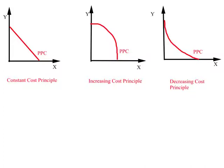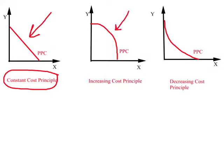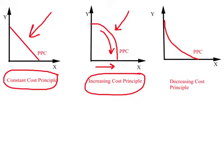The PPC for Mark Jeans Incorporated was a straight-line PPC because of constant opportunity cost — it just did not change. When you see a straight-line PPC, it reflects a constant cost principle: you give up a fixed amount of the other good as you increase production of one. Looking at another possible PPC shape, as you increase production of good X, the absolute value of slope continues to increase — this is the increasing cost principle. A third diagram represents the decreasing cost principle.